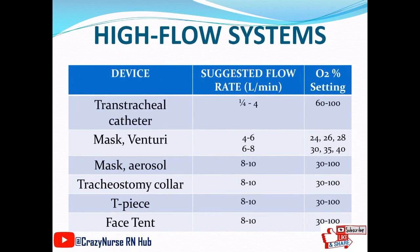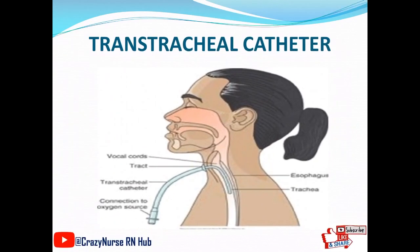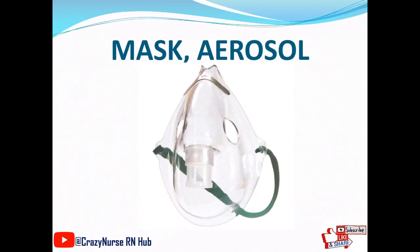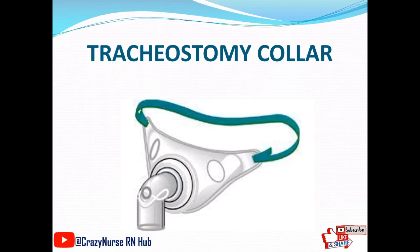For high flow systems, the devices include the trans-tracheal catheter, Venturi mask, aerosol mask, tracheostomy collar, T-piece, and face tent. Each has a suggested flow rate in liters per minute and an oxygen concentration setting. Examples shown include the trans-tracheal catheter, aerosol mask, tracheostomy collar, and T-piece.